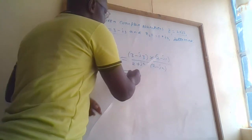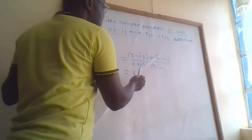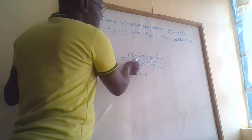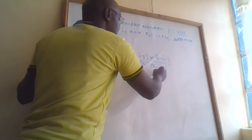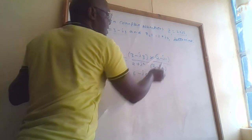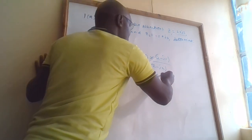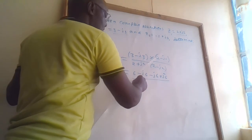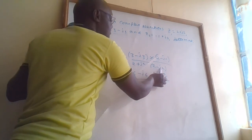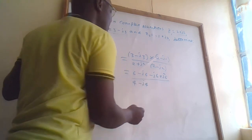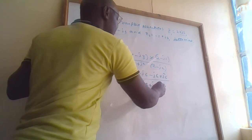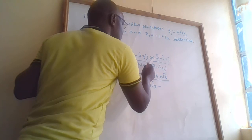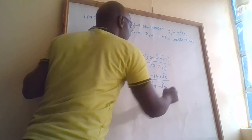Expanding the numerator: 3 times 2 gives 6, 3 times minus j2 gives minus j6, plus j3 times 2 gives j6, minus j3 times minus j2 gives plus j-squared 6. For the denominator: 2 times 2 gives 4, 2 times minus j2 gives minus j4, plus j2 times 2 gives plus j4, minus j2 times j2 gives minus j-squared 4.